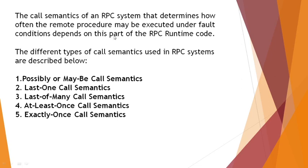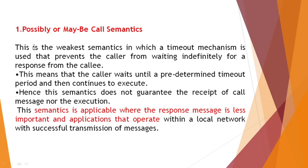Call semantics depends on the RPC runtime code. Different types of call semantics are used in RPC systems, and there are five different types. The first one is possibly or maybe call semantics. The second one is exactly once call semantics. We will discuss each in detail now.